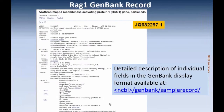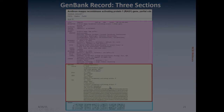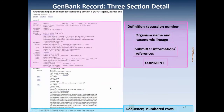Let's look at the GenBank record. There is a link on the page that will give you more information about the individual fields in a GenBank display format as shown on the screen. Primarily there are three parts: the top part shown here in pink, the next part outlined in red, and then the blue part.